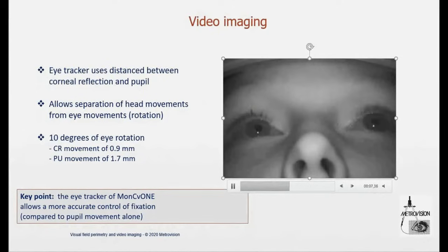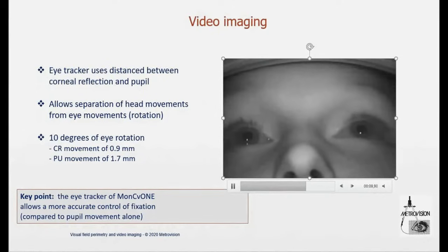You can estimate with some accuracy the orientation of gaze by measuring the distance between these two items. So if you look at the video on the right side here, you see two situations. The first situation, you just move your eyes, you rotate your eyes, and you see there is a displacement of the corneal reflex relative to the pupil.